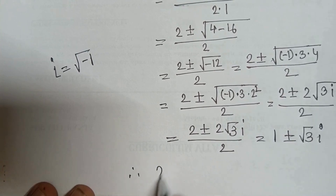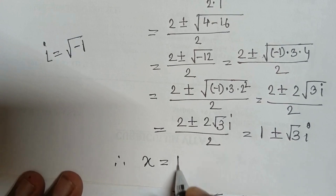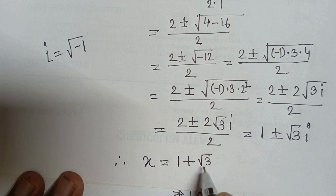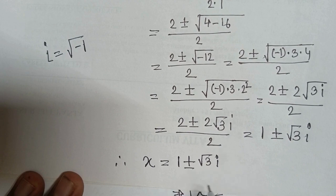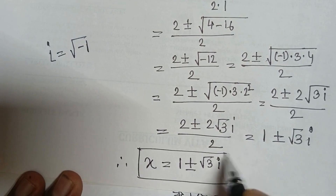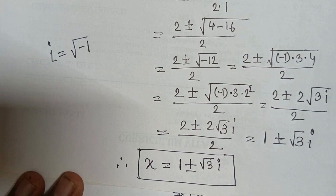In complex numbers, i equals root of minus 1. So the expression becomes 2 plus or minus 2 root 3 i divided by 2, which simplifies to x equals 1 plus or minus root 3 i.